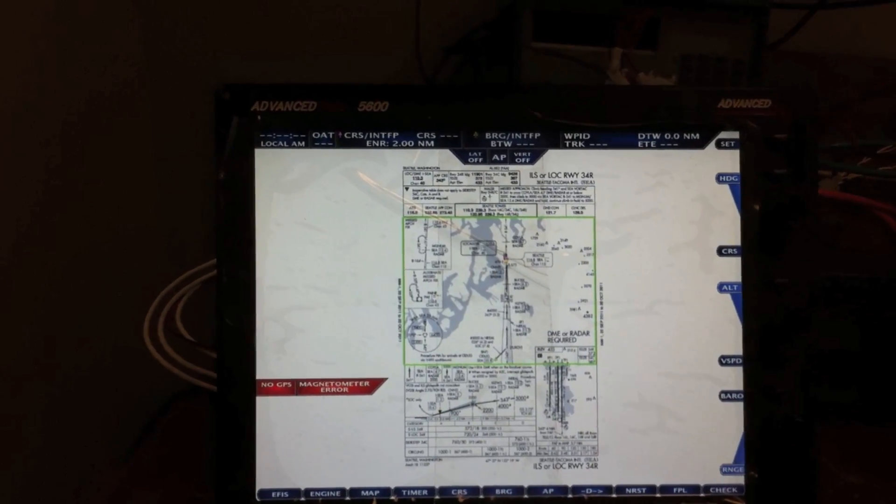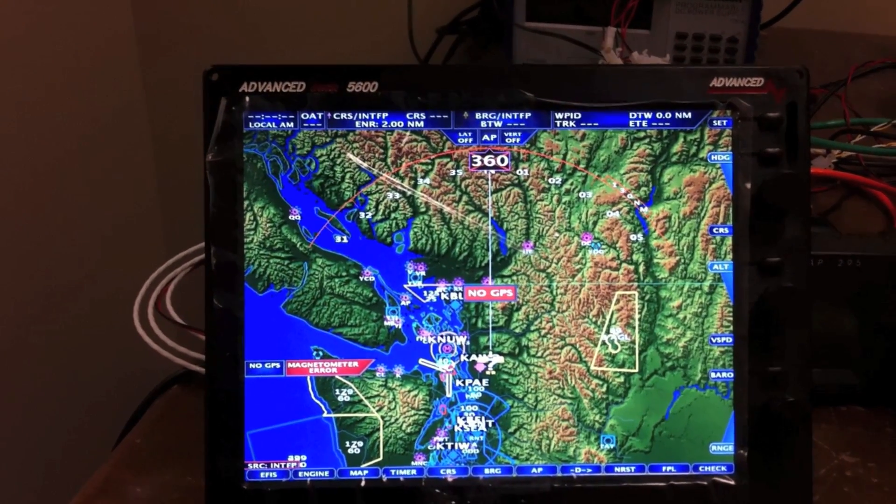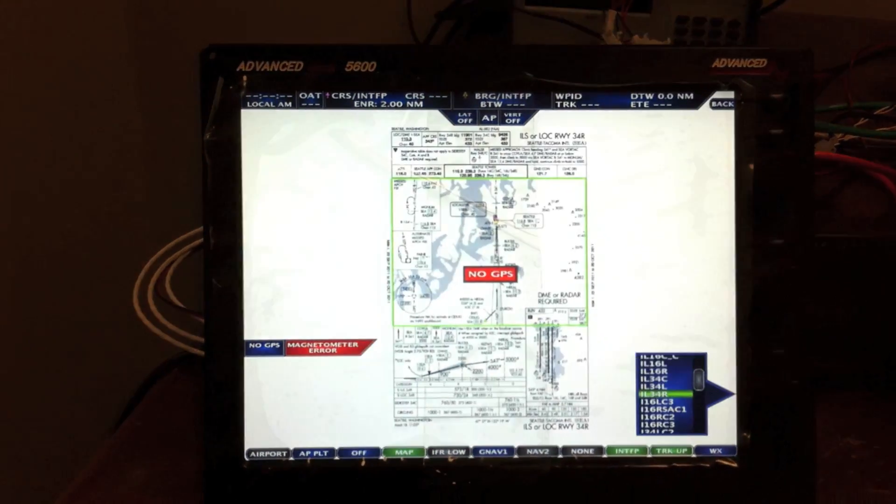If you want to go back to map, you just double click the map button. Go back to your approach plate. Hit map, approach plate. It's that easy.